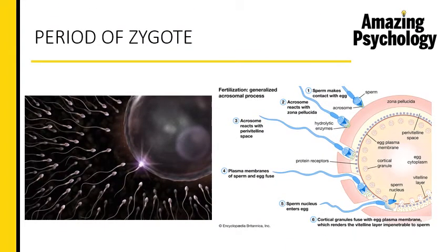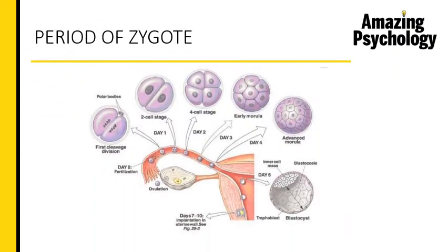You can see sperm collecting around the egg, and one sperm manages to penetrate the egg and the nucleus enters the egg cell. Once the nucleus enters, a zygote is formed and fertilization occurs. The zygote then travels down the fallopian tube into the uterus, dividing along the way — through the two-cell stage, four cells, then the morula, then an advanced morula, until it becomes the blastocyst. Implantation of the blastocyst into the uterus happens around days 7 to 10.